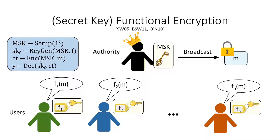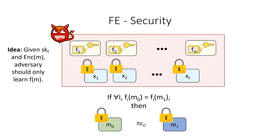Different users with different function keys should be able to compute their corresponding function on the encrypted input. Intuitively, for security, we want it to be the case that the user learns only f of m and nothing else. We can formalize this by considering an adversary that is allowed to request function keys for functions of his choice, along with encryptions and messages of his choice. At some point, the adversary outputs two messages, m0 and m1, and receives an encryption on one of the two. Security holds if the adversary cannot distinguish between the encryption of m0 and the encryption of m1. We also require that for every function for which the adversary requests a function key, that function evaluates the same value on both messages. Otherwise, by correctness of the scheme, the adversary could trivially distinguish by computing the function on the received ciphertext and comparing it to f(m0) or f(m1).